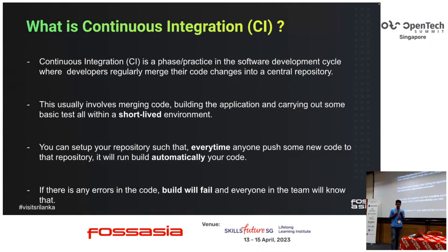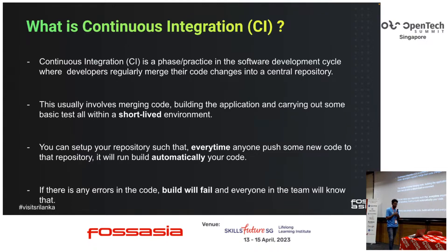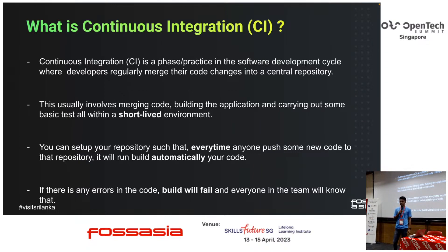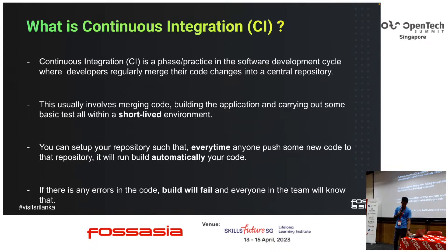Let me start with what is continuous integration. It is actually a fast and common practice in the software development cycle, where developers work together in a single project and regularly merge code. This is basically CI. We check some basics such as unit tests and integration tests, and maybe you can have some code quality checks, within a short-lived environment. What does it mean by short-lived environment? You just need to spin up an instance when needed — you don't need to run it all the time. You can set up your repository so that every time someone pushes code, the CI can trigger and run. If there are any build failures, it will notify the relevant team so you can have a look at what happened in the CI pipeline.